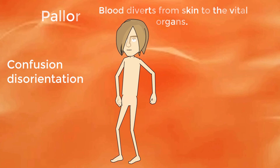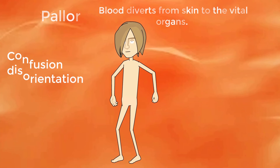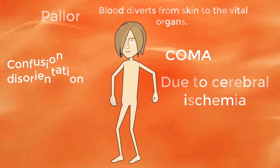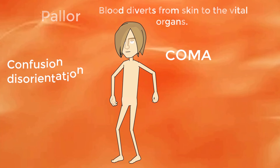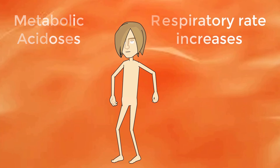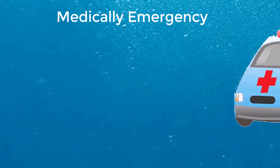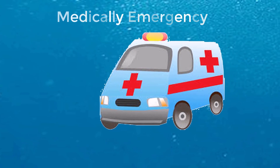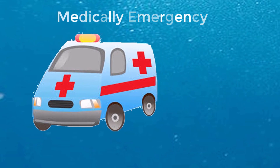Central nervous system changes ranging from disorientation and confusion to coma result from decreased cerebral perfusion pressure, a factor dependent on mean arterial pressure. Lactate production causes metabolic acidosis, and in order to compensate, the respiratory rate is increased. Hypovolemic shock is a medical emergency. If compensatory mechanisms are unable to sufficiently restore arterial pressure and perfusion, irreversible shock and death can occur.